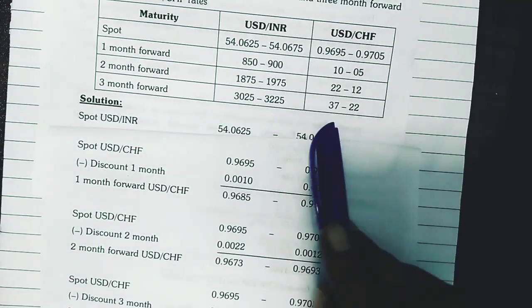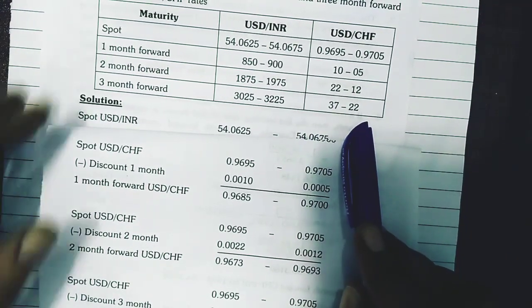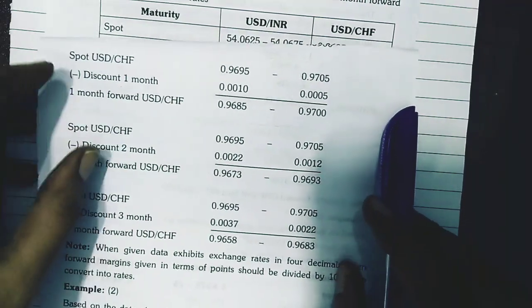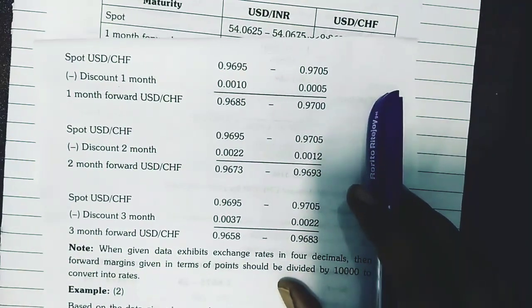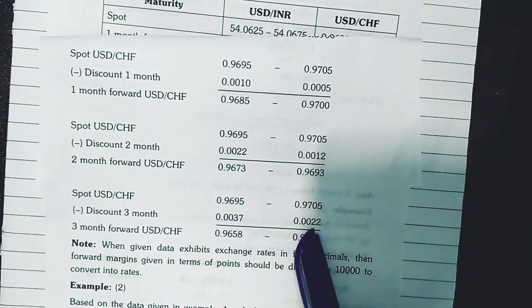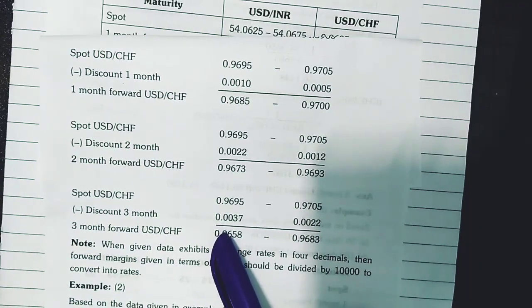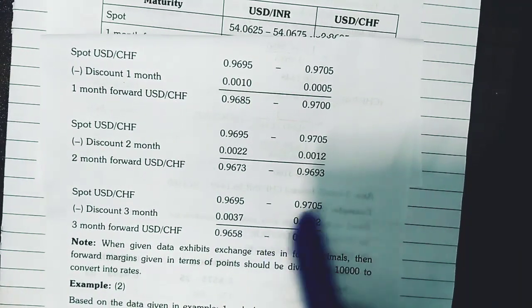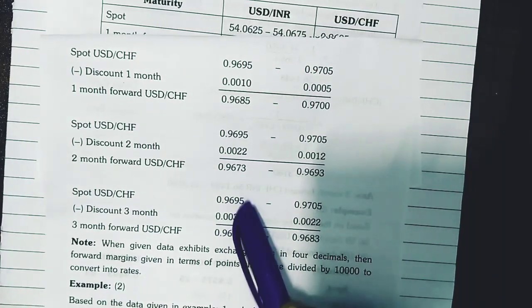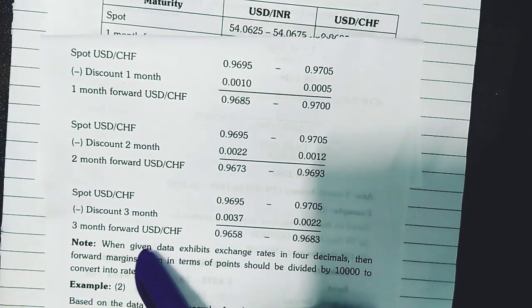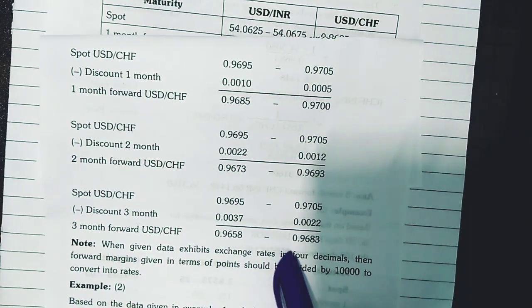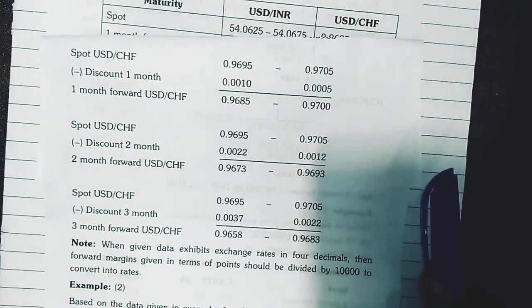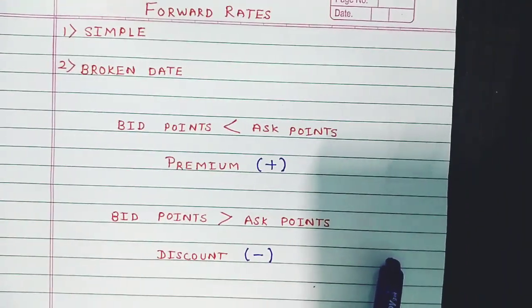For the three month forward, the forward points are 37 and 22. Again the bid is higher than the ask, so the currency is at a discount and we subtract. We divide by 10,000 to get bid and ask points, then subtract from the spot rate. The three month forward rate for USD-CHF is 0.9658 and 0.9683.